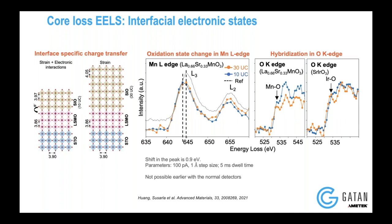All of these changes happen both on the LSMO side and the strontium chromite side. I would like to emphasize that all of these chemical maps were collected with a very small dwell time, which means we don't give enough time for the material to be damaged by the electron beam. If you increase your dwell time by a lot, you can introduce different kinds of oxygen vacancies or change the oxidation state of transition metals.